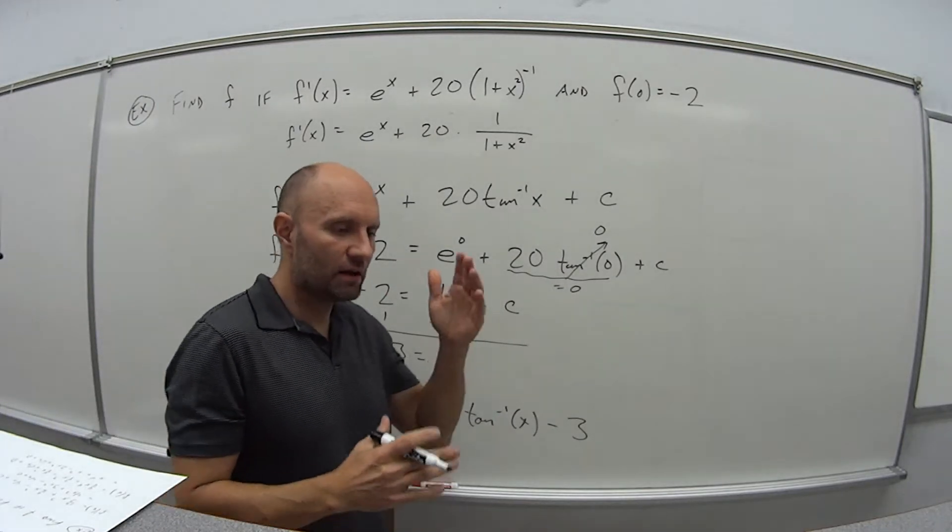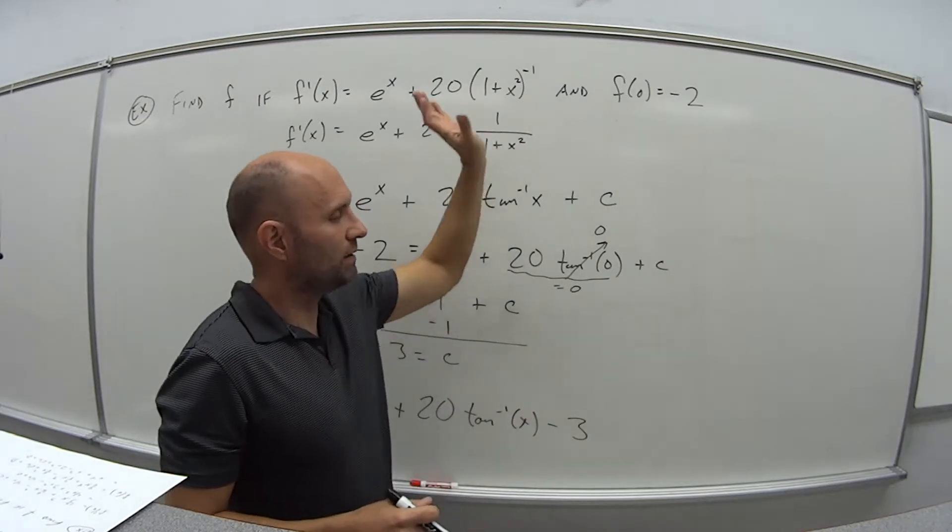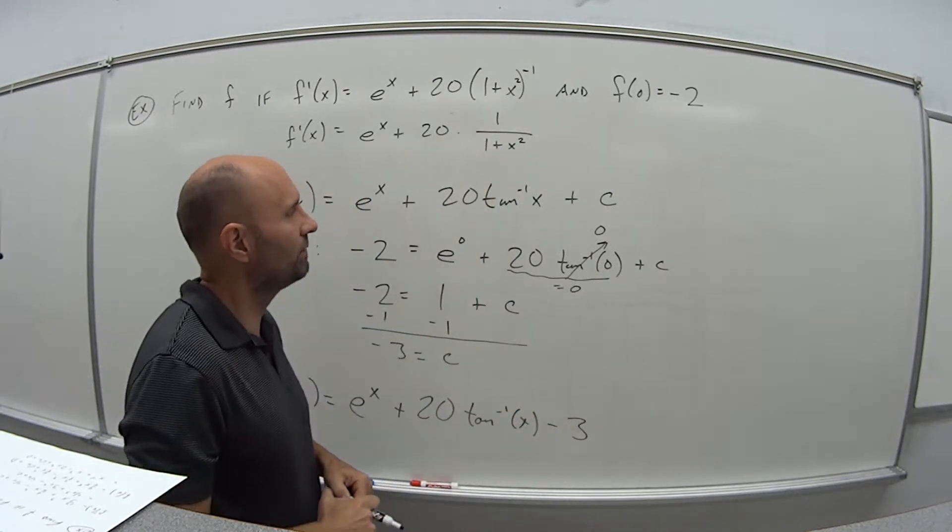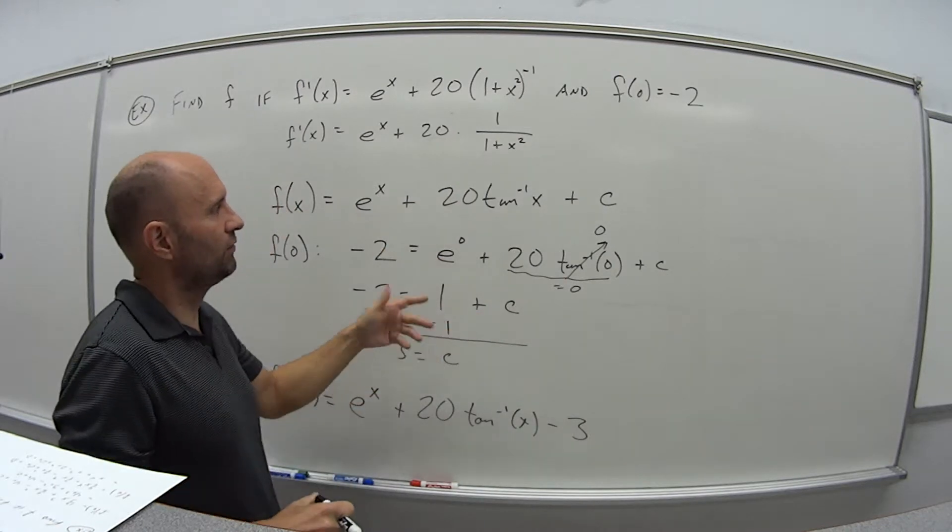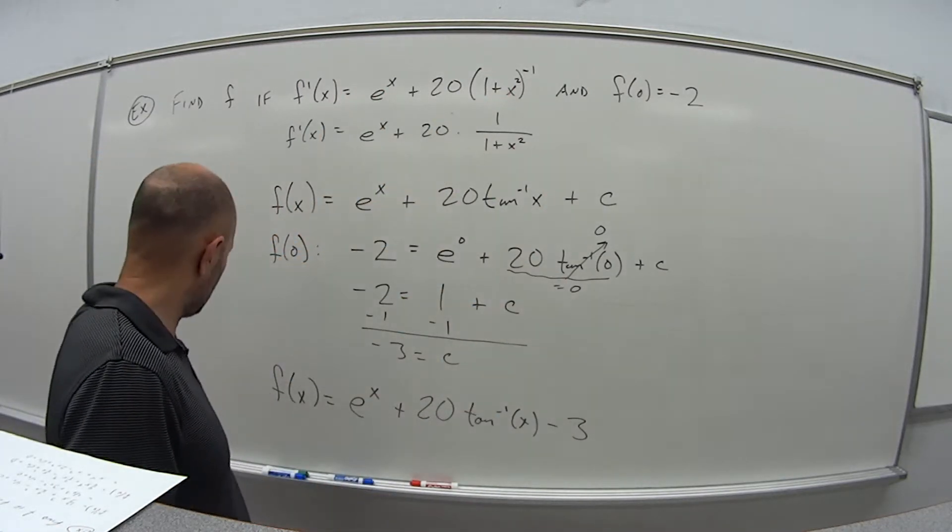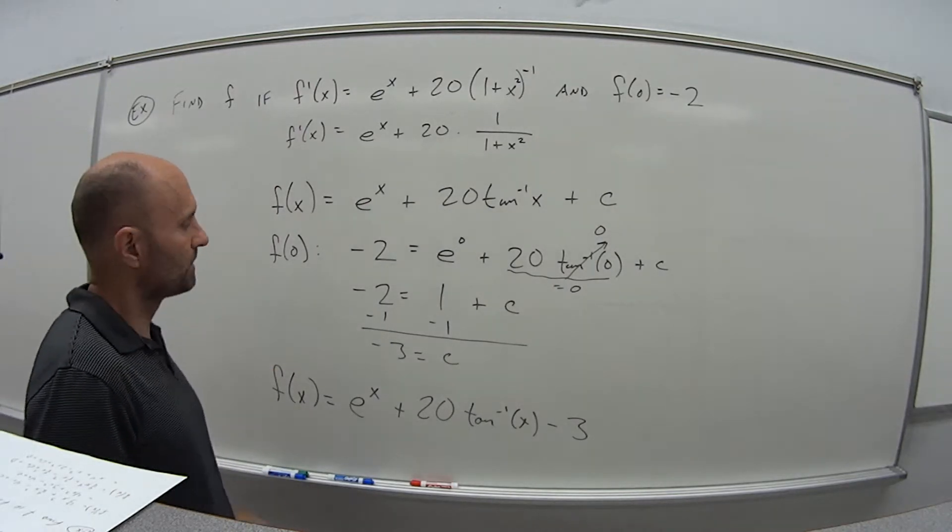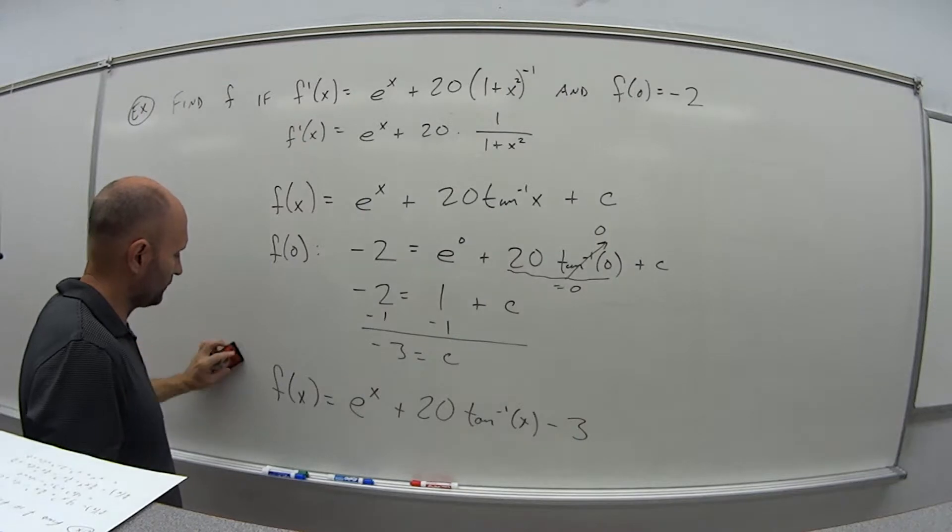So that's it for this guy. So same idea. Make sure we have our pieces separated. Simplify it if you can. It might jump out at you then what the antiderivative is. Take the antiderivative. If we're given some information, then go ahead and plug those in to find our constant value. Alright. I'm going to erase this. We'll do another example.